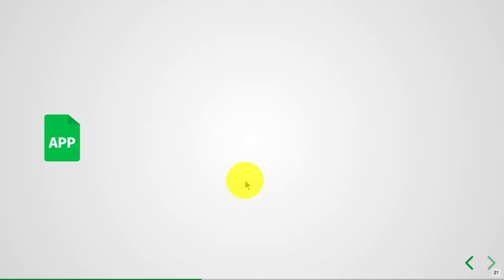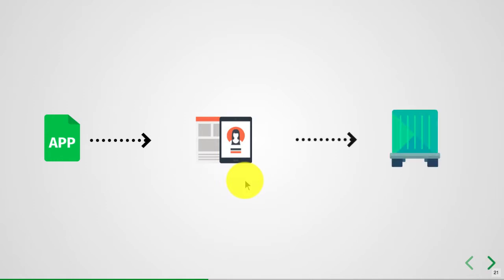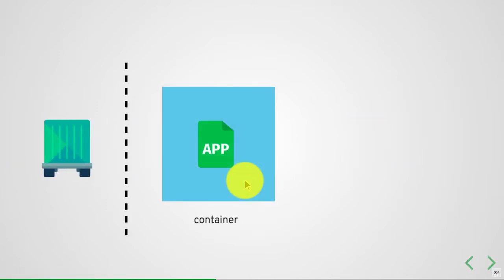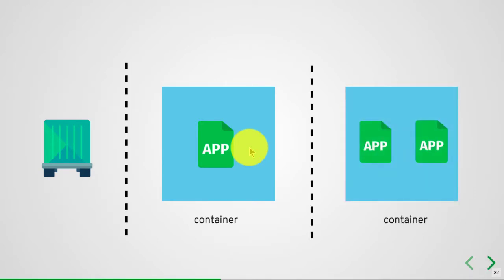When you want to launch an application with containers, you take that application, package it as a container image, and that image is what you use to distribute it to others as well as to launch the applications. When you do that, you typically have a one-to-one mapping — one application per container image — and that is good for a lot of purposes.